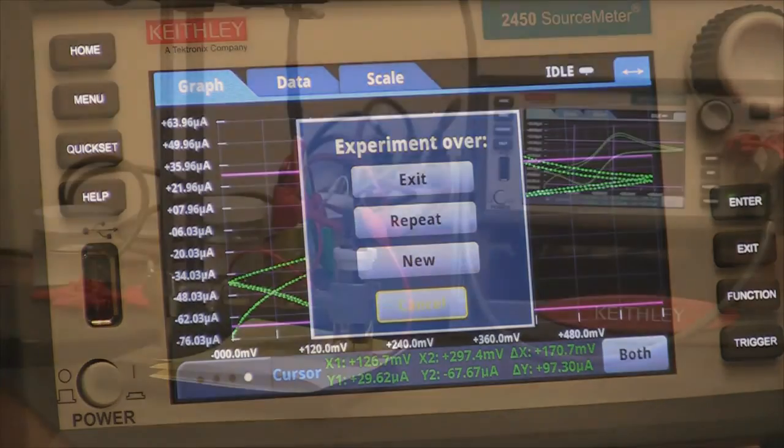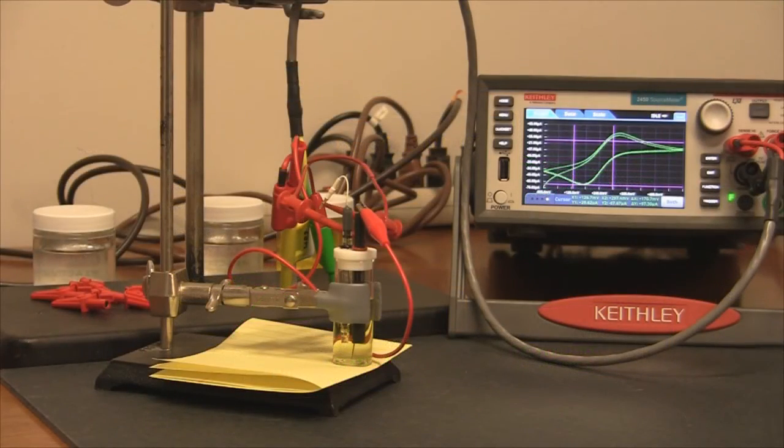And there you have it. So here you have it. This is how easy it is to make a cyclic voltammogram with the 2450-EC.